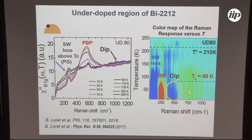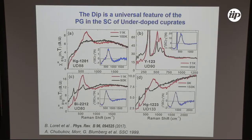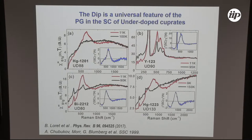This dip only appears when the pseudogap is present and is universal. We have Raman measurements in a single-layer compound, where you clearly see a dip on the right energy side of the pair-breaking peak. It is more evident than in Bismuth-2212, which is a two-layer compound. You also have a dip in a mercury compound with a three-layer copper oxide layer.